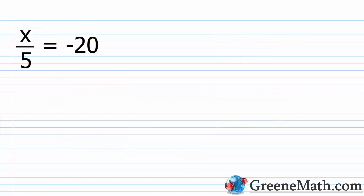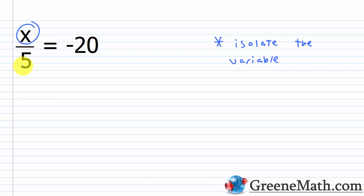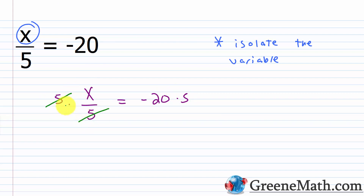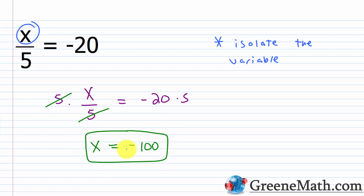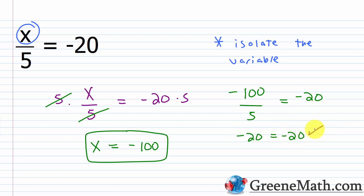Next, we have X divided by 5 equals negative 20. Again, I want to undo what's being done to X. Since X is being divided by 5, I multiply both sides by 5. X over 5 times 5 equals negative 20 times 5. The 5s cancel, giving 1 times X, which is just X, equals negative 100. Checking: negative 100 divided by 5 should equal negative 20, and it does — negative 20 equals negative 20. So this is true.